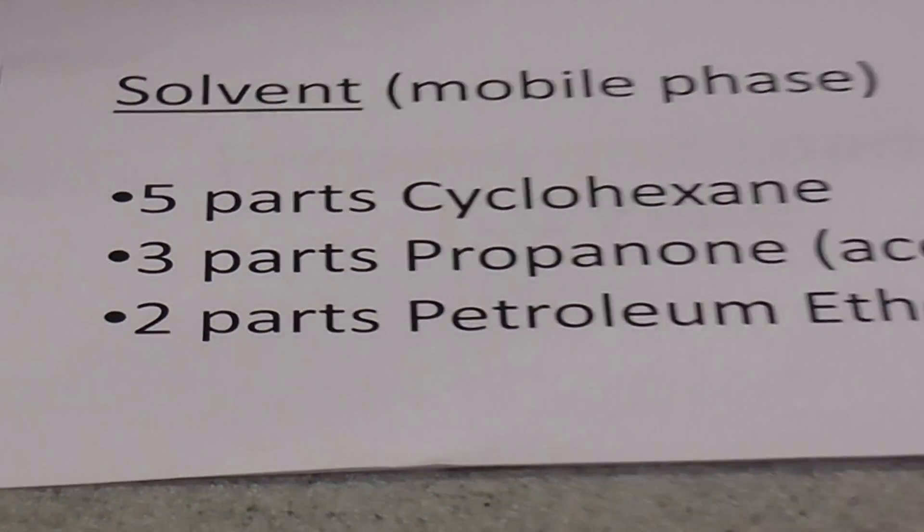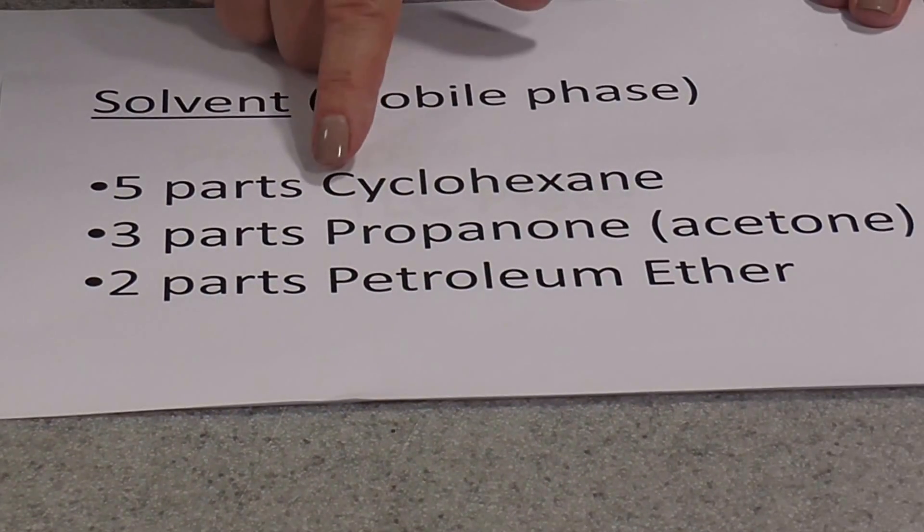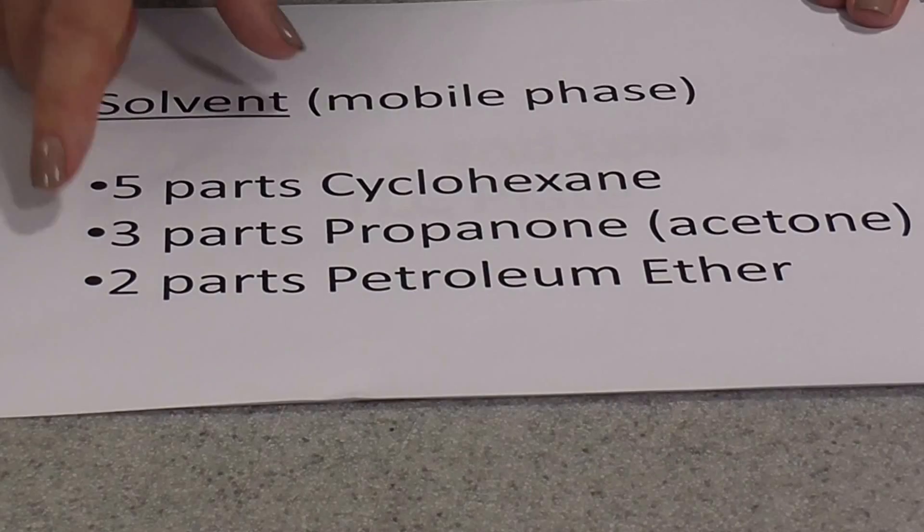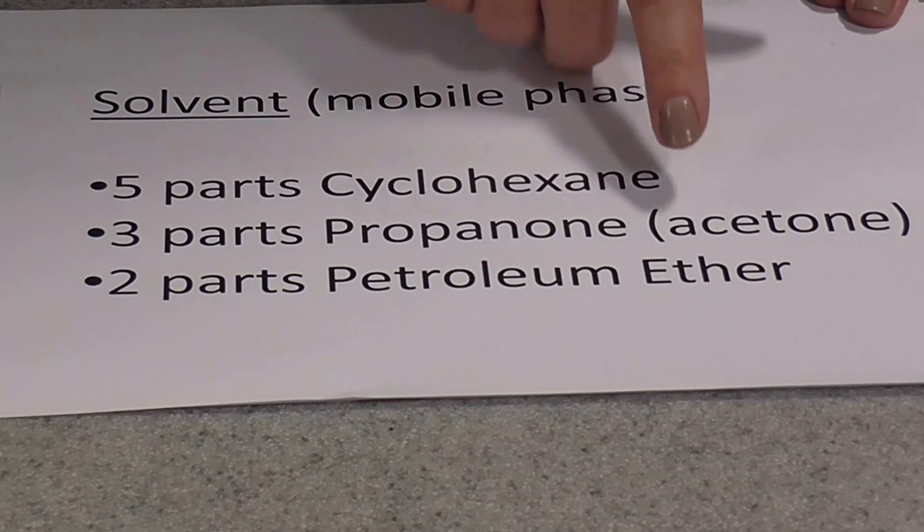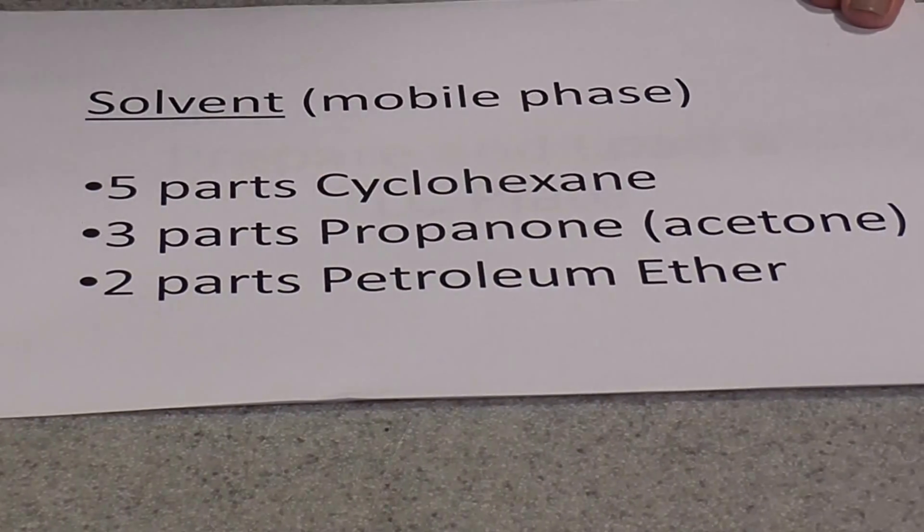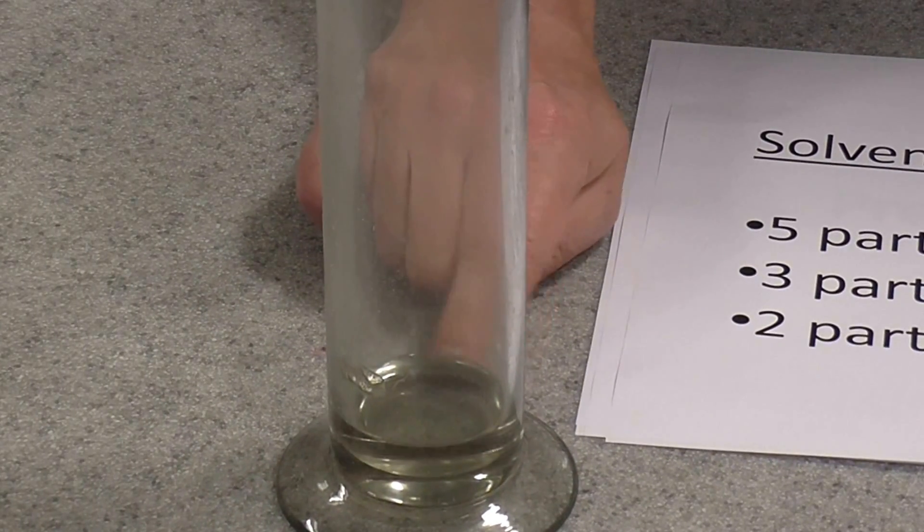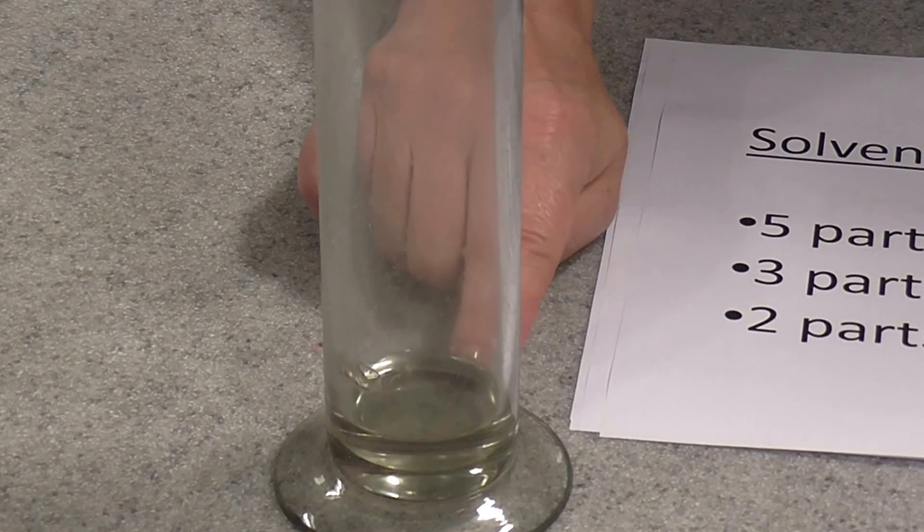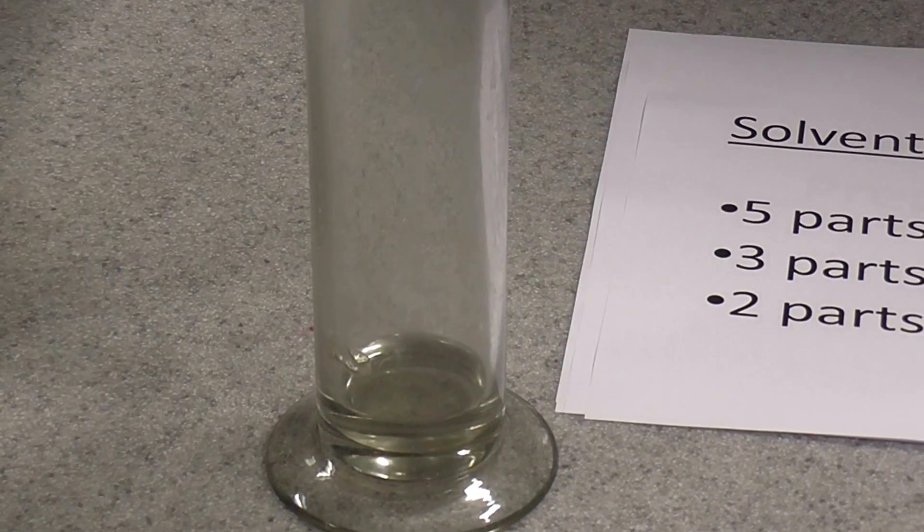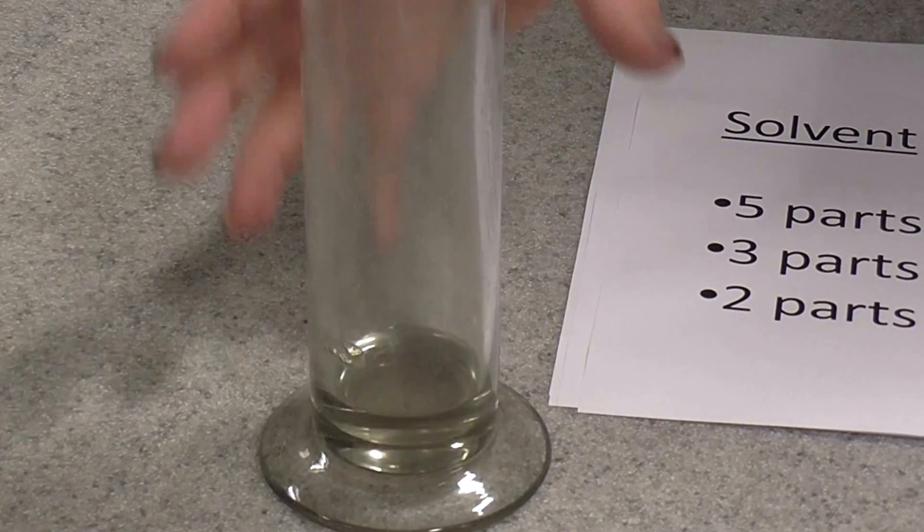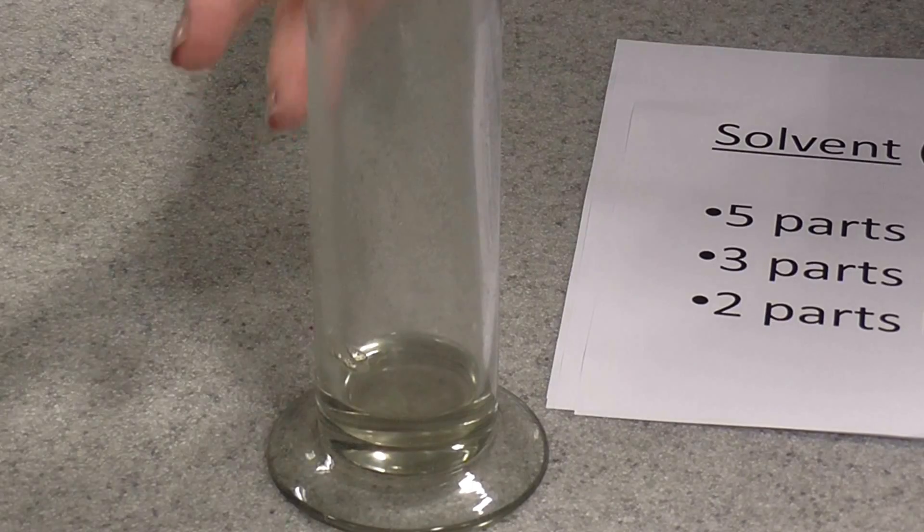Now the solvent in this case is 5 parts cyclohexane, 3 parts propanone, or in other words acetone, and 2 parts petroleum ether. So you need to put a little bit of that about a centimeter deep at the maximum into the bottom of your gas jar and put the lid on so that it's quite volatile and you'll actually get the vapors collecting in here.